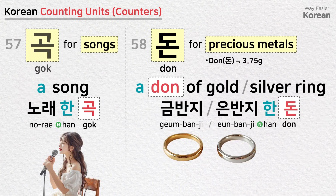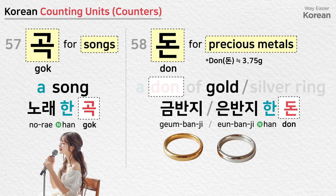곡 is a counting unit for songs: a song — 노래 한 곡. 돈 is a unit of measurement of weight used for precious metals, equivalent to 3.75 grams: a don of gold ring — 금반지 한 돈; a don of silver ring — 은반지 한 돈.